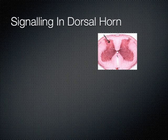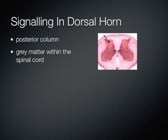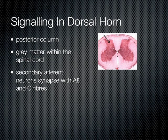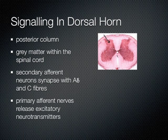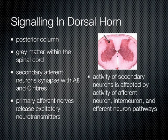Signaling in the dorsal horn. The dorsal horn, also called the posterior column, is the area of gray matter within the spinal cord. In the dorsal horn, secondary afferent neurons synapse with A-delta and C fibers. Primary afferent nerves release excitatory neurotransmitters. The activity of secondary neurons is affected by the activity of afferent neuron, interneuron, and efferent neuron pathways.